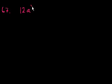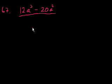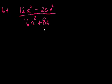Problem 67 — this is good practice, they give a bunch of it. They say what is 12a cubed minus 20a squared over 16a squared plus 8a, reduced to lowest terms? So let's try to factor out things on the top and the bottom and see what happens.